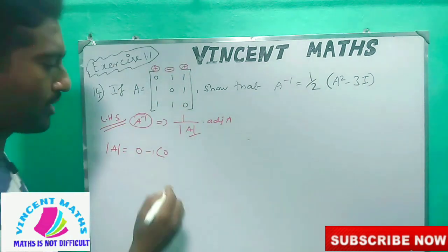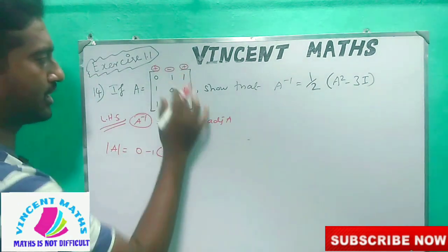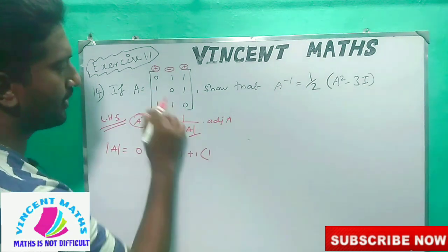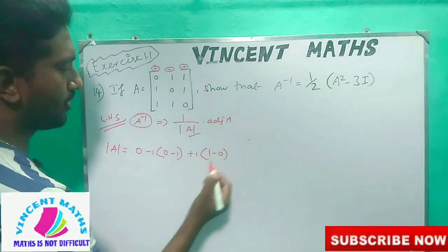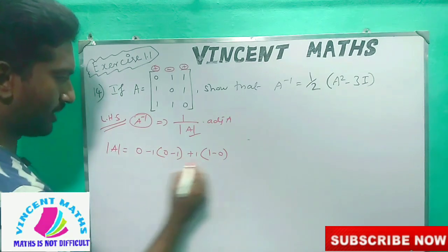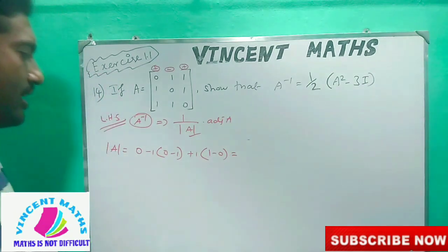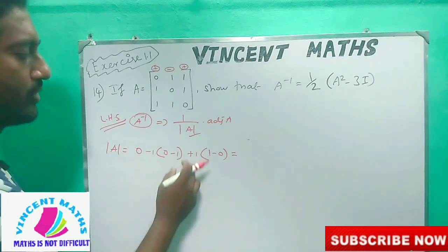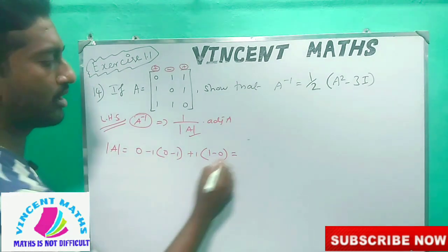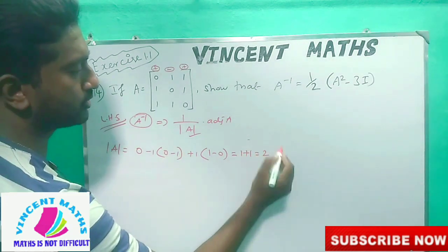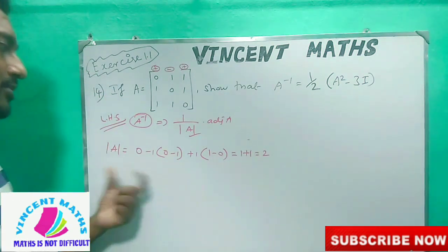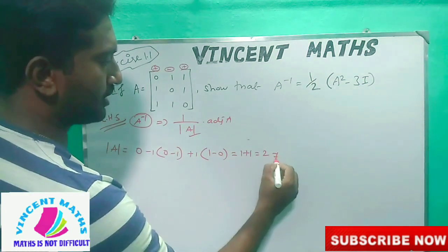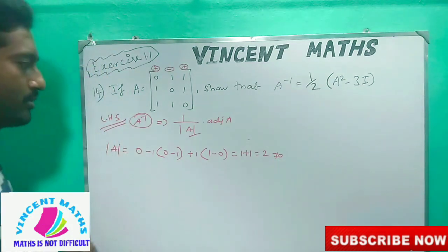By 1, it is minus 1 plus 1. 1 by 1 is 0. If we do minus 1 by 1, 1 by 1, 1 plus 1 is equal to 2. So what do we do with A? That is why we do A inverse. That is the step we do with A.